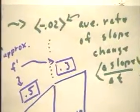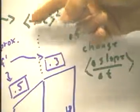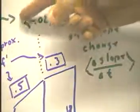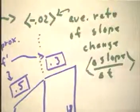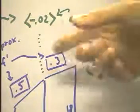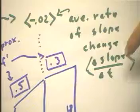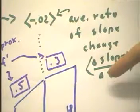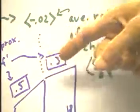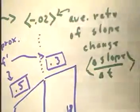We designate that average rate of slope change by putting it between something that looks sort of like less than and greater than signs, call them pointy brackets. And we see that the average rate of slope change, which is change of slope over change of time, change of slope is negative 0.2, the change in time is 10 seconds, so we get a rate of negative 0.02.